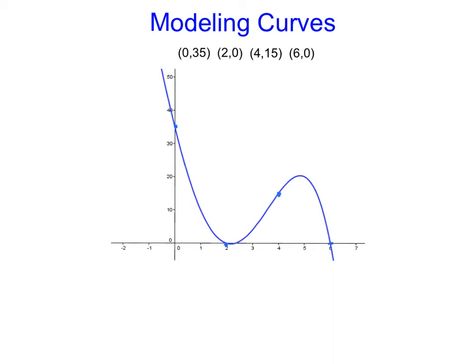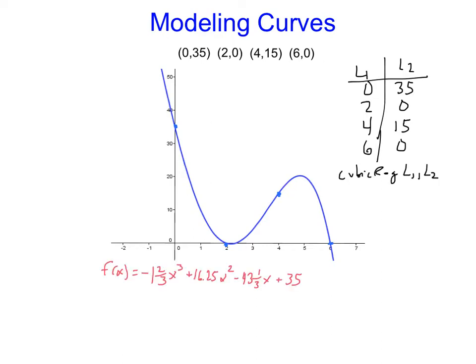So it makes sense to model this with a cubic. We'll type this stuff into list 1, list 2, and then have the calculator do a cubic regression on that. And we get this not particularly nice, but not all that ugly equation. And that's going to model that. That'll hit all those curves.